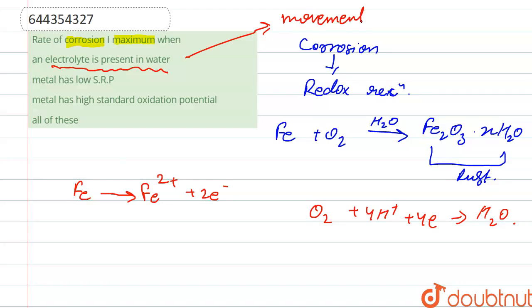Next is: metal has low standard reduction potential or metal has high standard oxidation potential. So it is also correct when metal has high oxidation standard potential, it means it has more tendency to undergo oxidation.